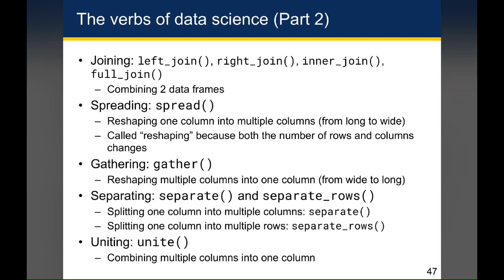Typically, when you do a left join, the data frame on the left, which is the first argument, is the one that you're primarily interested in. And when you do a right join, the data frame on the right, which is the second argument, is usually the one that you're primarily interested in.